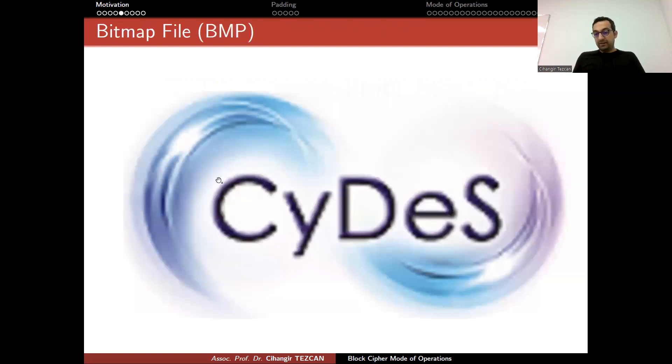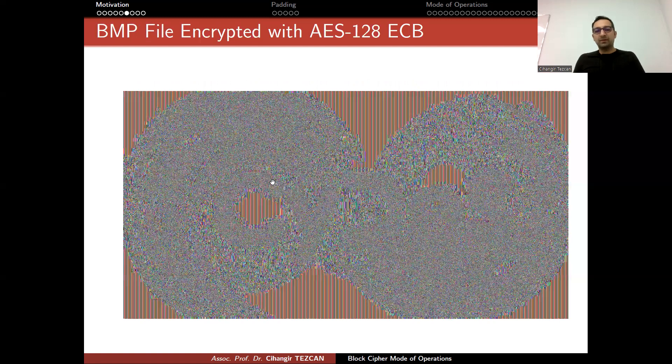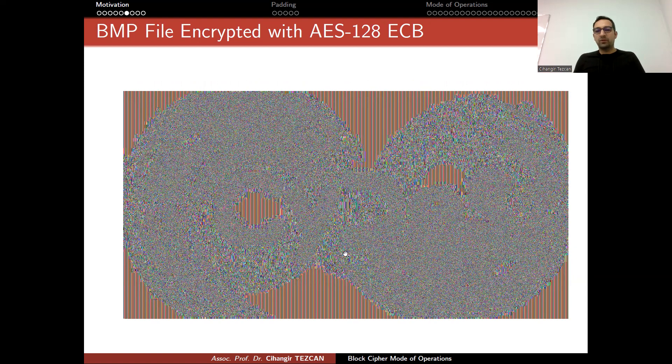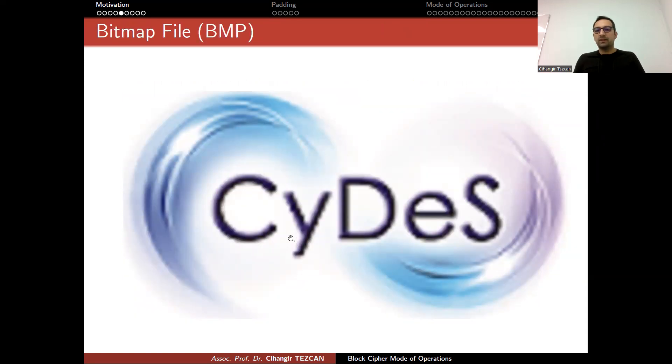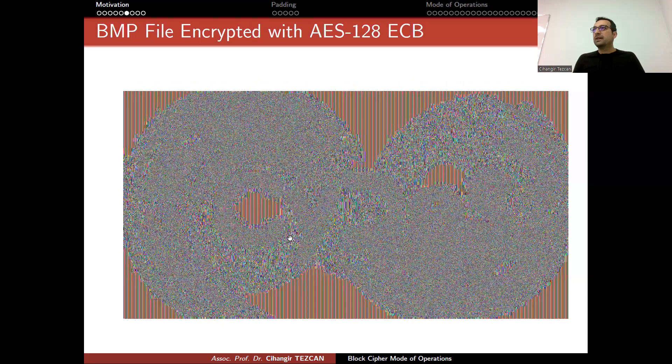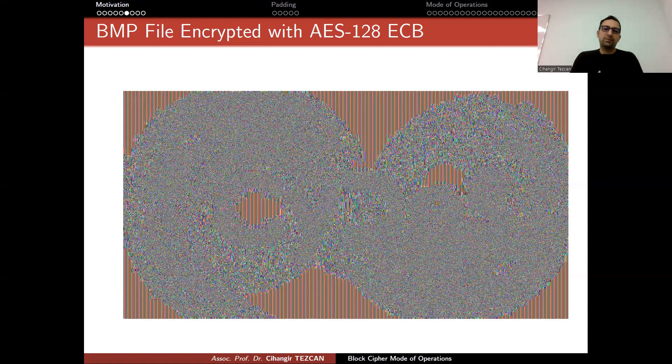So another picture is our logo of the laboratory. So this is a very low-resolution image. As you can see, you can count the pixels from here. But even in this scenario, the encrypted version, you can even read the ciphertext from here. If you look at this one and this one, this is what happens. But even just looking at these parts, you can understand that the original plaintext is a bitmap file. So this is unacceptable.